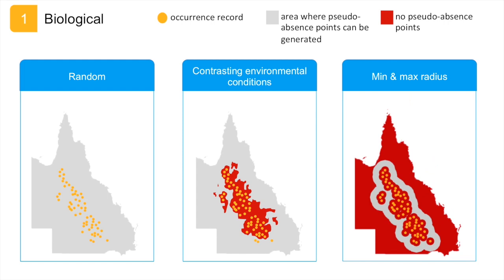Another method is to generate pseudo-absence points in a radius around an occurrence point. You first set a minimum distance from your occurrence point. This ensures you do not place a pseudo-absence point too close to an occurrence record as you may assume that the environmental conditions would be too similar. You then set a maximum distance from your occurrence point to ensure your pseudo-absences are not in inappropriate locations which may result in over-prediction. We call this the Min and Max Radius method.